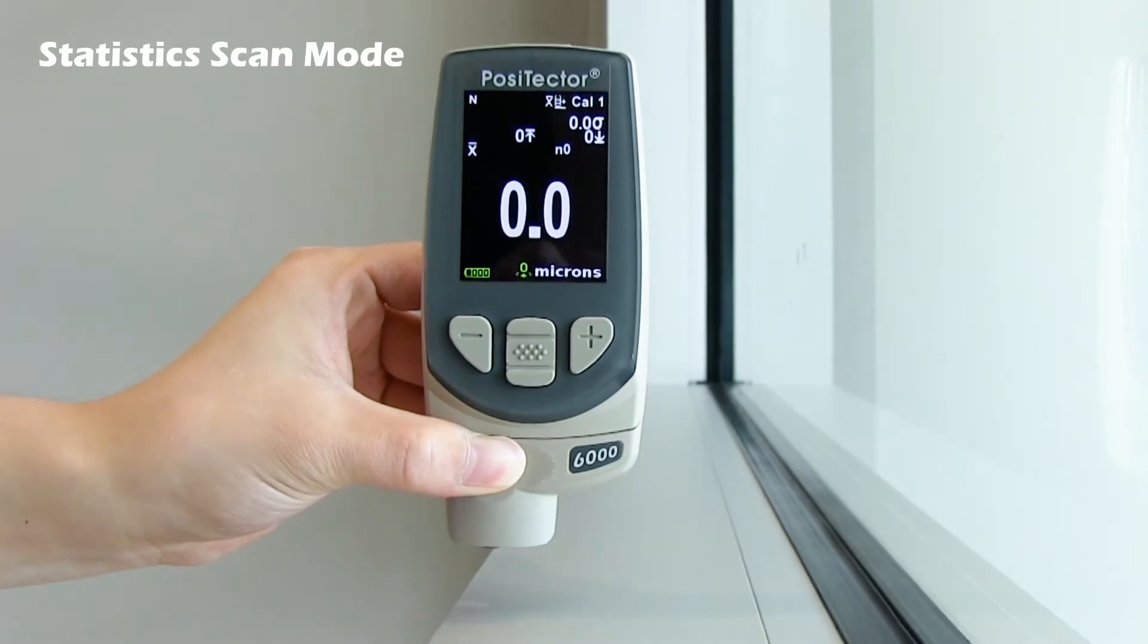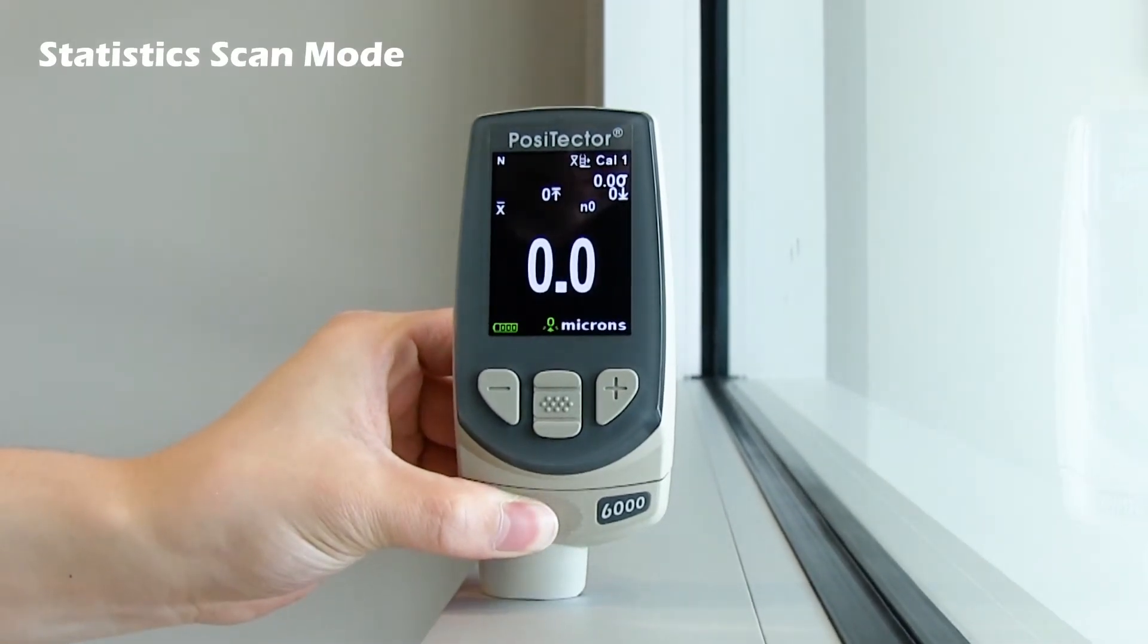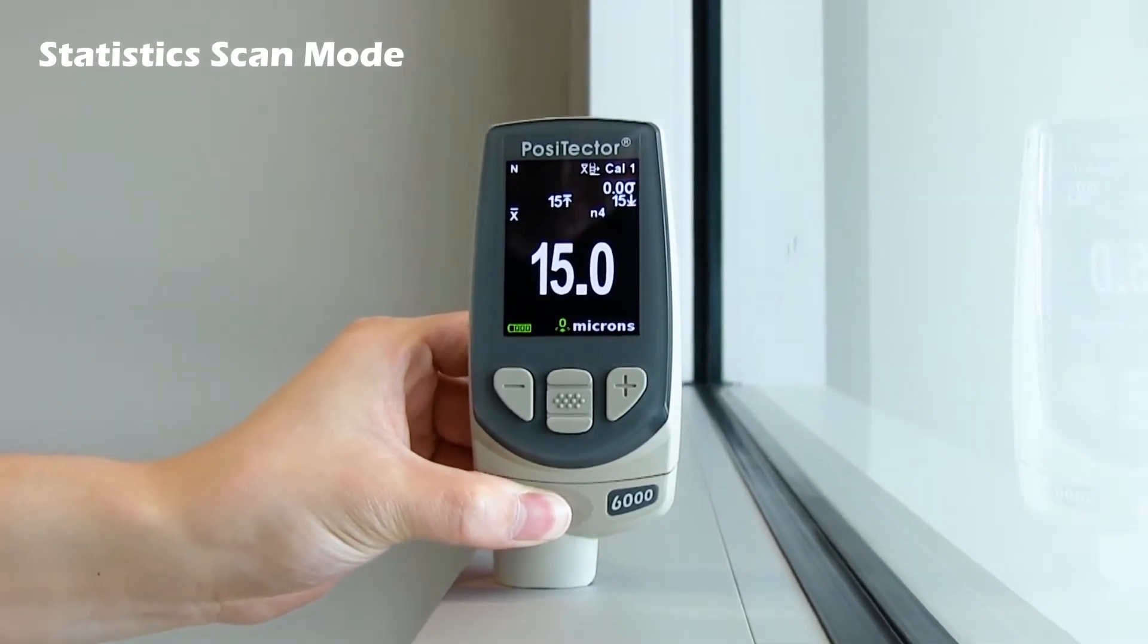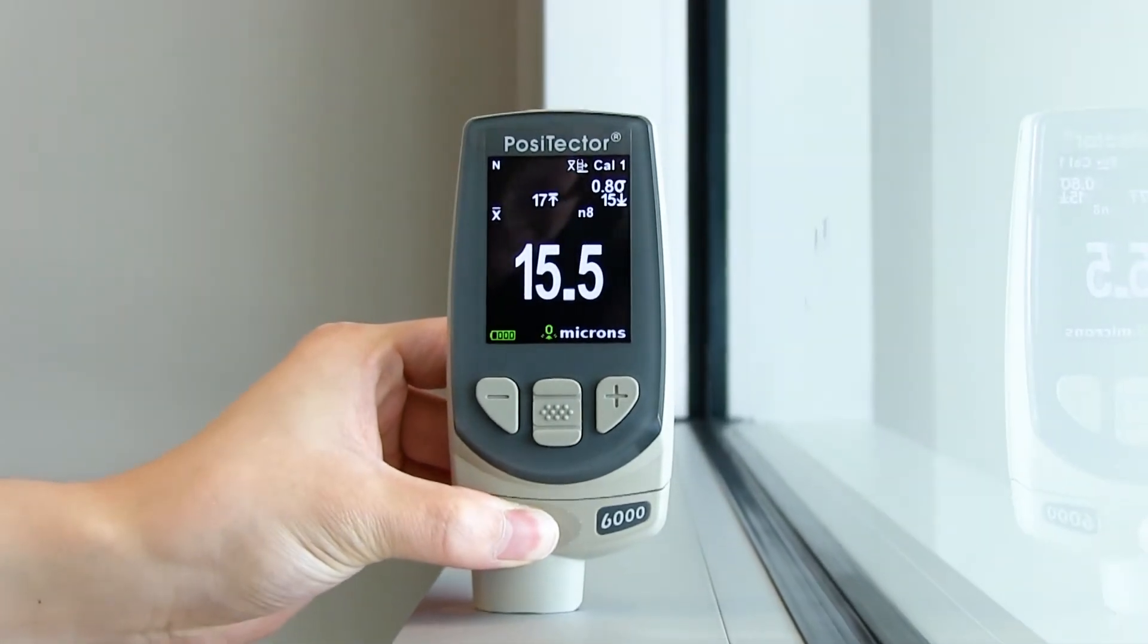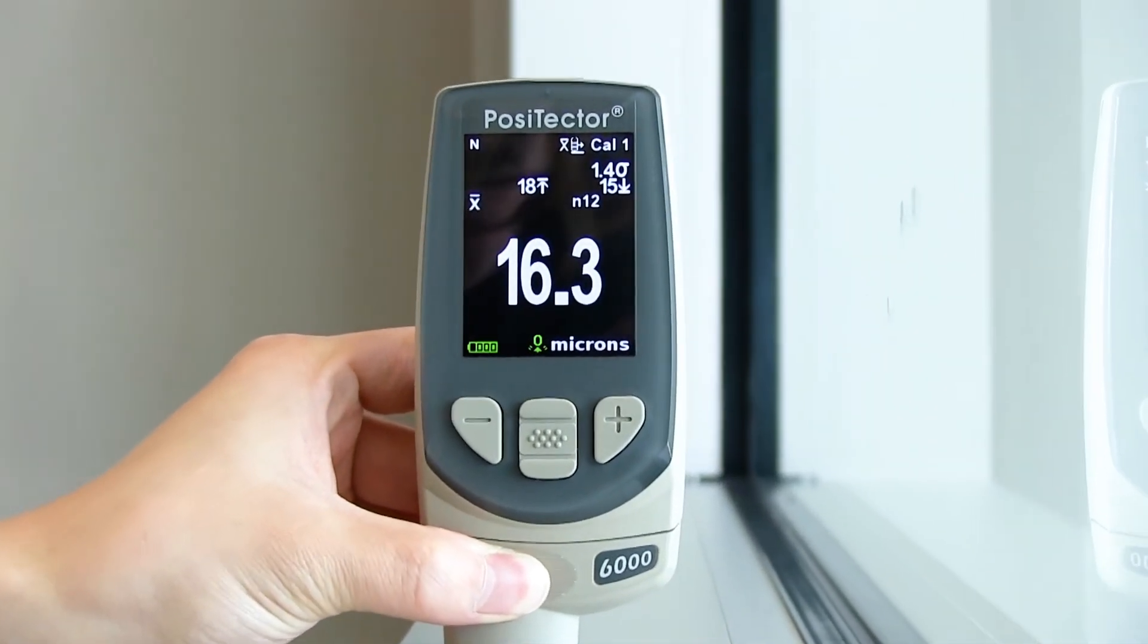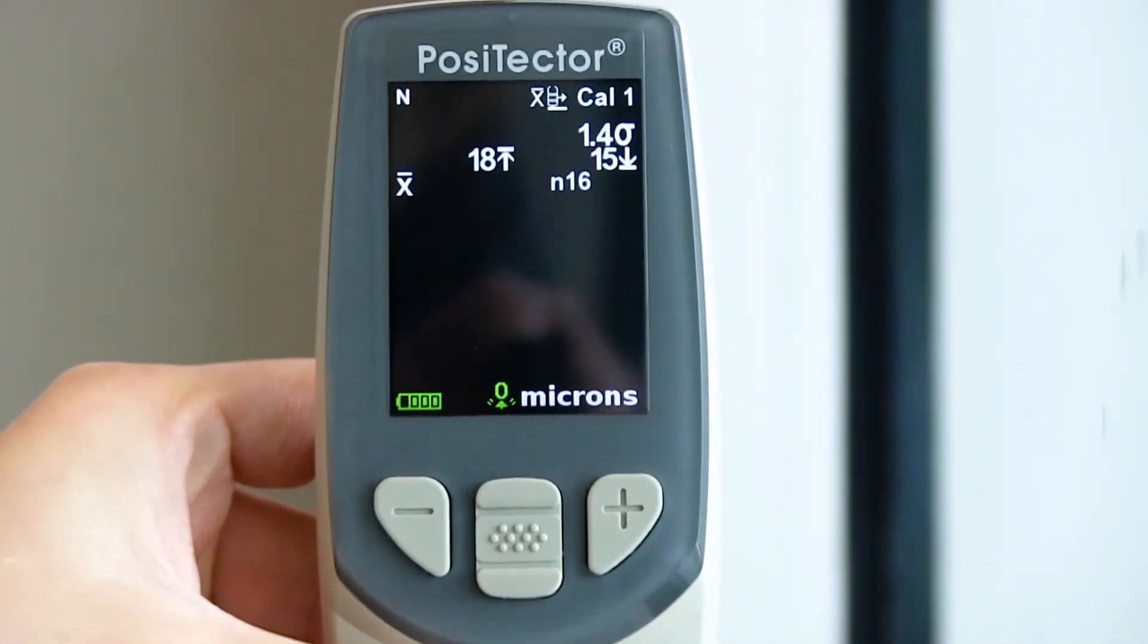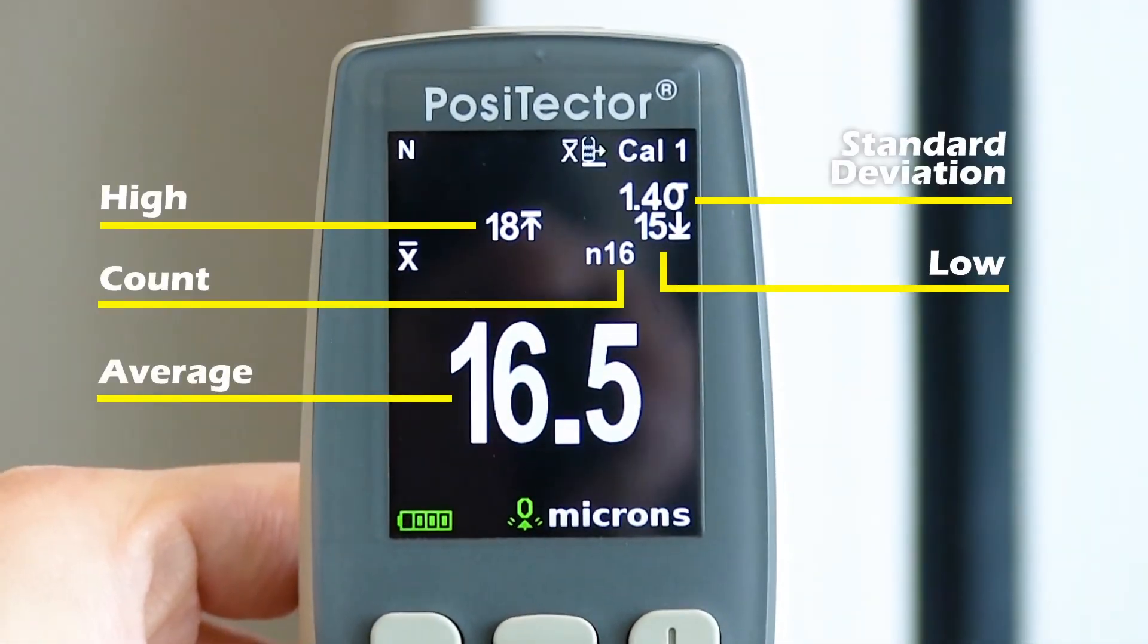In statistics scan mode, a running average is displayed on the screen while taking readings, in addition to the minimum, maximum, and standard deviation values. When memory mode is enabled, these five parameters are saved after each scan without saving the individual readings.